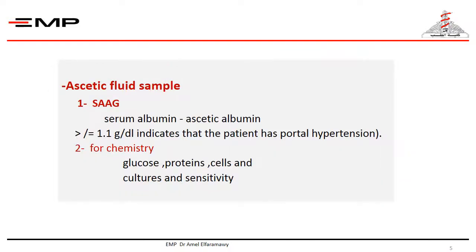Ascitic fluid sampling is indicated for calculation of SAAG, which is the serum albumin-ascitic albumin gradient. If it is equal to or more than 1.1 gram per deciliter, this indicates that the patient has ascitis due to portal hypertension. Ascitic fluid chemistry is also assessed for glucose, proteins, and cellular content, and for culture and sensitivity.